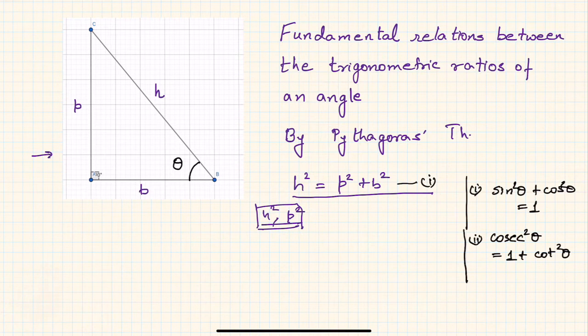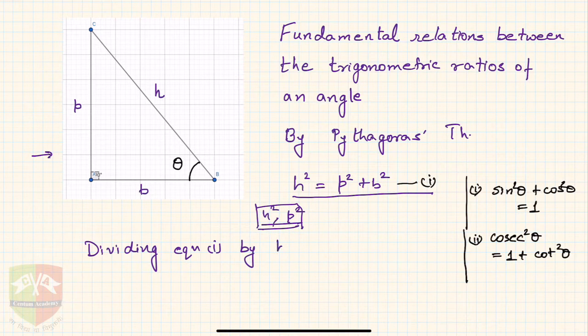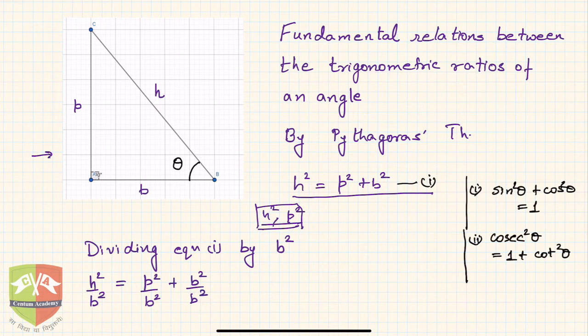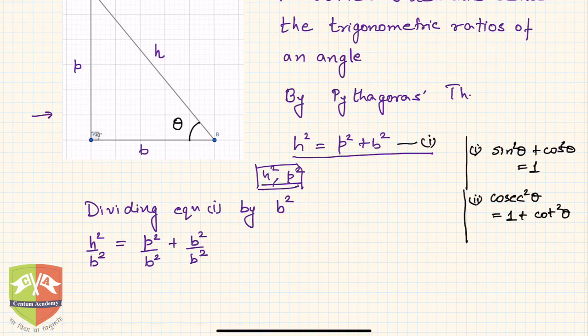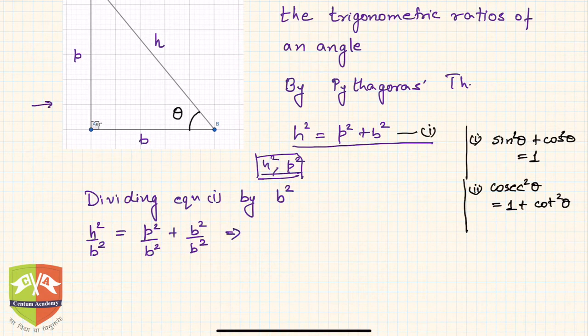What will we get? We will get h squared by b squared equals p squared by b squared plus b squared by b squared. This implies h upon b whole squared is equal to p upon b whole squared plus one.